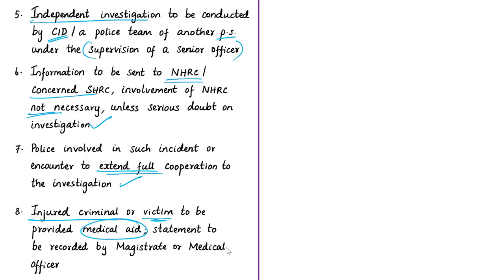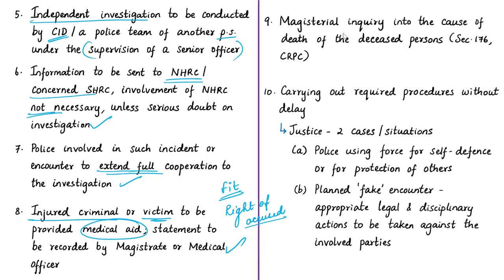Medical aid for an accused is required for two reasons: first, to ensure the person is fit to participate in investigation and court proceedings; second, because extending such aid is part of the accused's rights — the court of law, not the police, determines guilt through an efficiently conducted investigation and trial. A magisterial inquiry into the cause of death must be conducted as per Section 176 of the Code of Criminal Procedure.